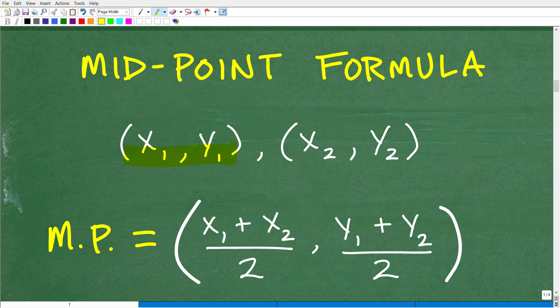And here we have two points, x1, y1, x2, y2. So this is just an algebraic notation to delineate, hey, we have one point here and another point here, two different points.